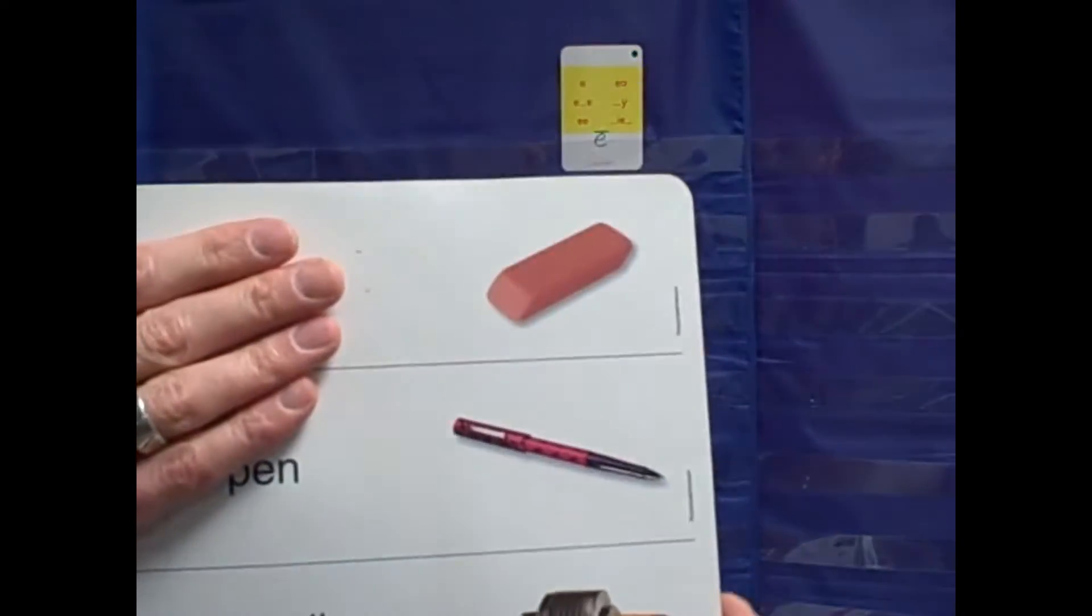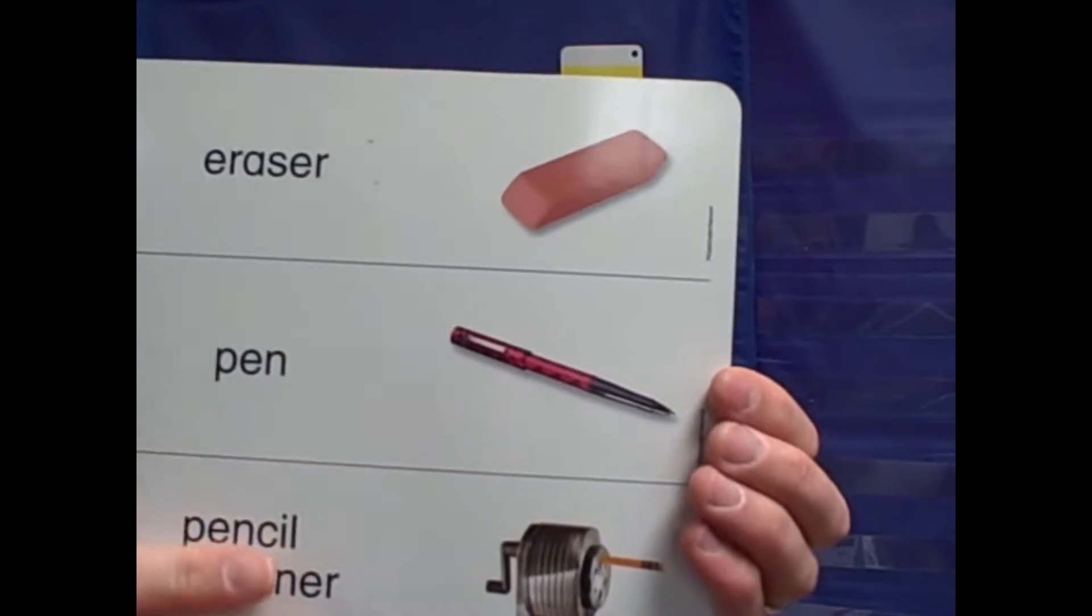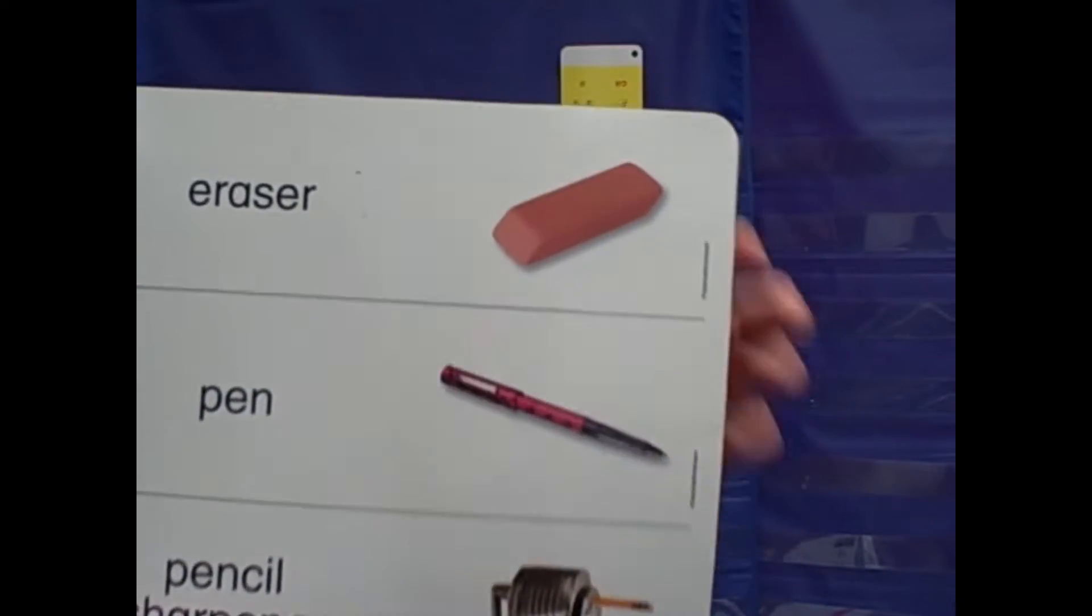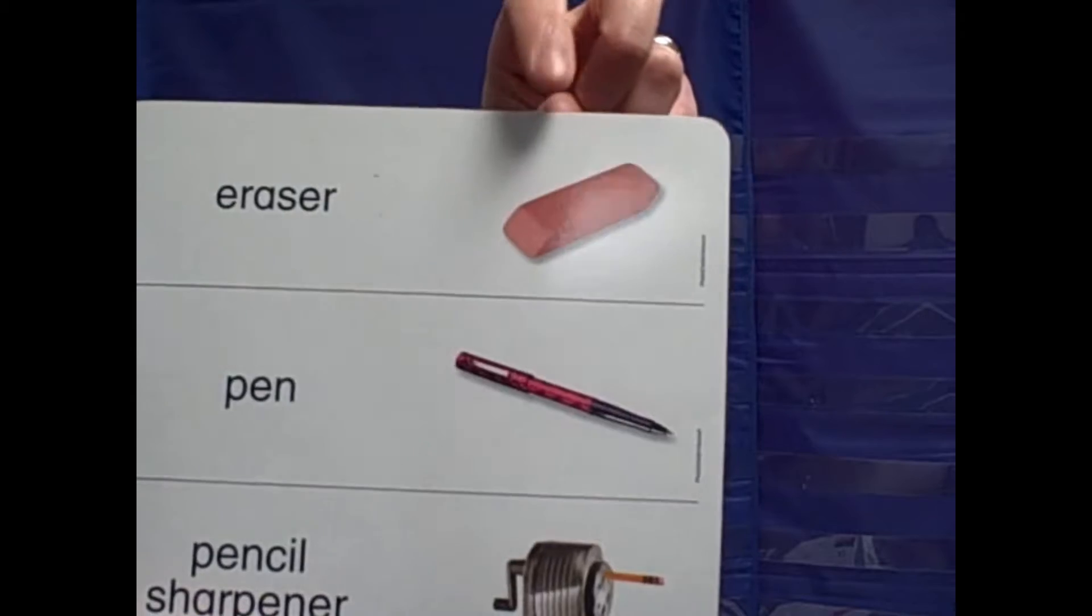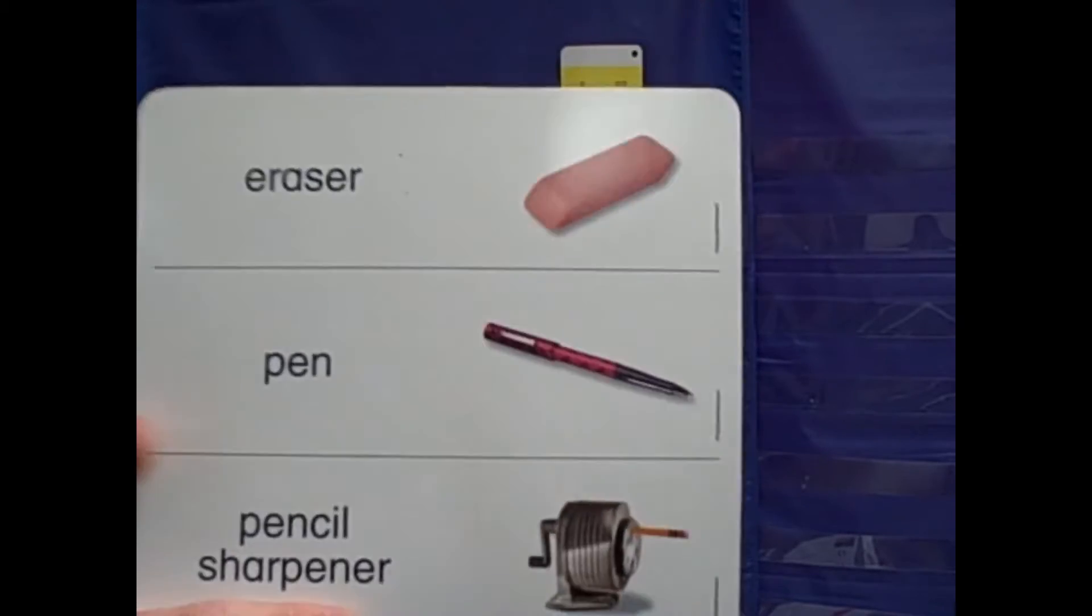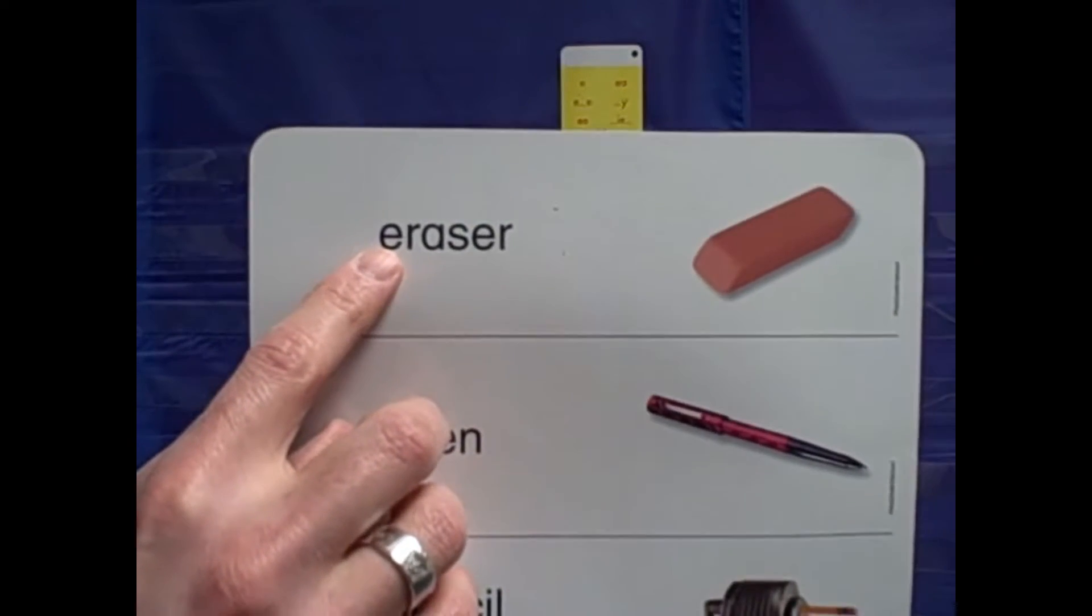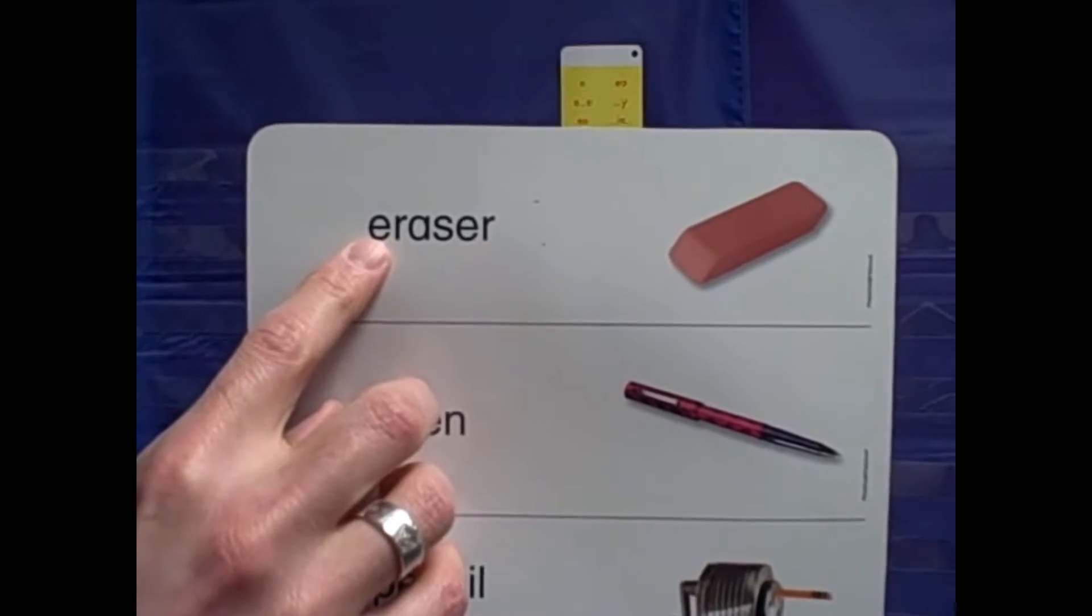The picture I show the students for the first spelling, E, is an eraser. I show them the picture, we say the word, and then we practice reading it. E says E in this word, eraser.